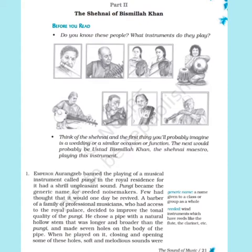Let's start the chapter. Emperor Aurangzeb banned the playing of a musical instrument called poongi in the royal residence because it had a shrill, unpleasant sound. 'Banned' means prohibited, 'shrill' is a very sharp and piercing sound. Aurangzeb, the famous Mughal ruler, did not allow the poongi to be played in his royal court because its sound was shrill and piercing.